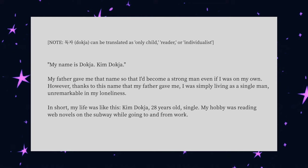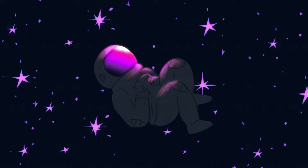The Omniscient Reader's Viewpoint is about what it tells you from the title, from the start: "My name is Doctor Kim. My father gave me that name so that I'd become a strong man even if I was on my own. However, thanks to this name, I was simply living as a single man — unremarkable in my loneliness. Kim Dokja, 28 years old, single. My hobby was reading web novels on the subway while going to and from work." This is a novel about reading. It's a novel centered on the act of, the desperation for, and love for reading, guiding you through Dokja's survival and multiple deaths throughout the apocalypse with his favorite characters and the people he's managed to endear himself with. And it is with that that we can now talk about death.